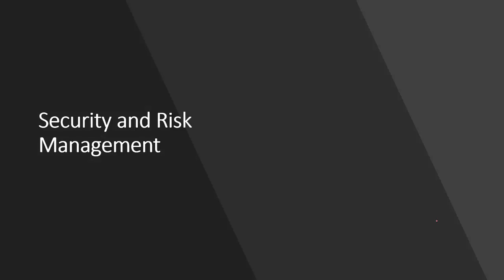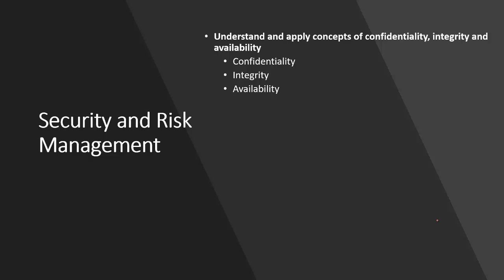The first part of this domain is called 'Understand and Apply the Concept of Confidentiality, Integrity, and Availability.' Security is always driven by the CIA triad. My information must always remain confidential — that is my primary preference. It must remain accurate — that is another preference. And it must be available whenever required. That is the true principle of information security.